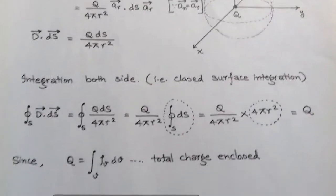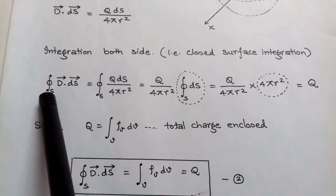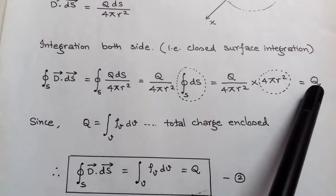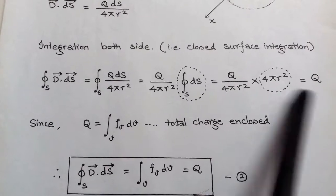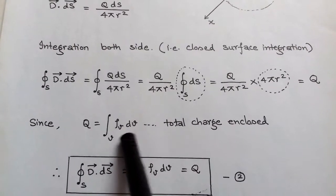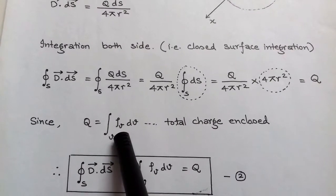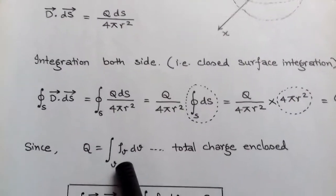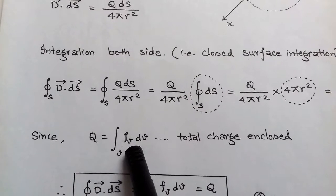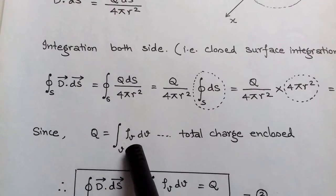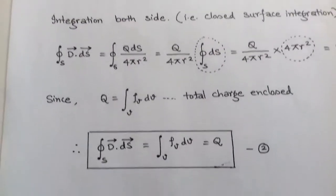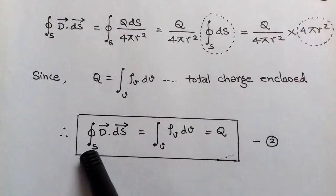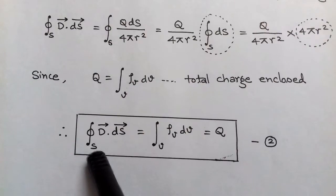So the closed surface integration of D dot dS equals q, which is the flux. We get the result: total electric flux through any closed surface equals the total charge enclosed by that surface. Now, q also equals the volume integration of rho_v dV, since the charge q is spherical and acquires some volume. So the total charge enclosed is also written in terms of volume charge density rho_v integrated over volume. This second equation is expressed in terms of volume integration and closed surface integration.